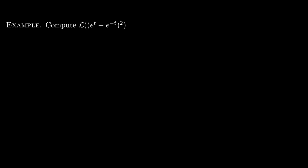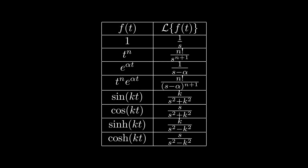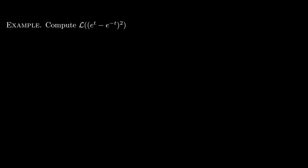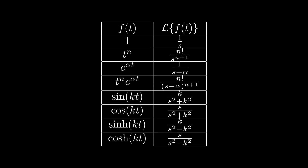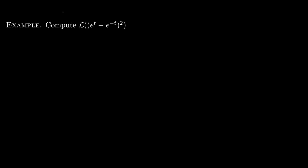Let's see how to use these two linearity rules on a few examples. The first example is computing the Laplace transform of (e^t - e^{-t})². It doesn't immediately match any function in the table because of the square, so we need to manipulate this function into a linear combination of functions that appear on the left-hand side of the table.